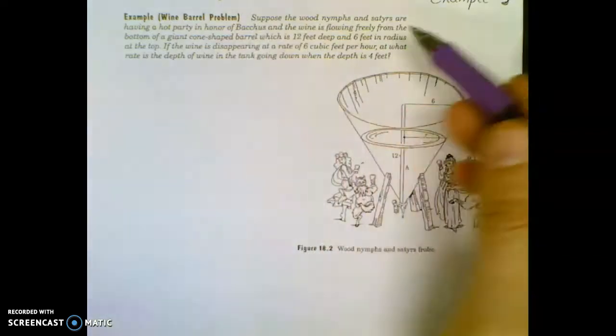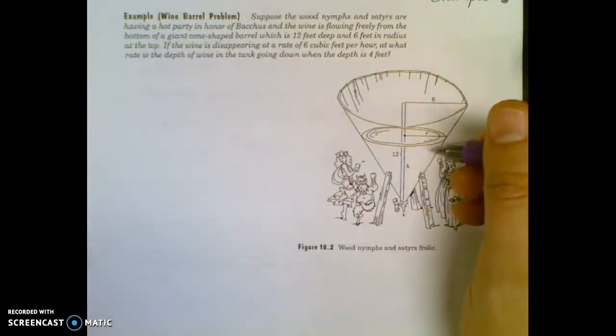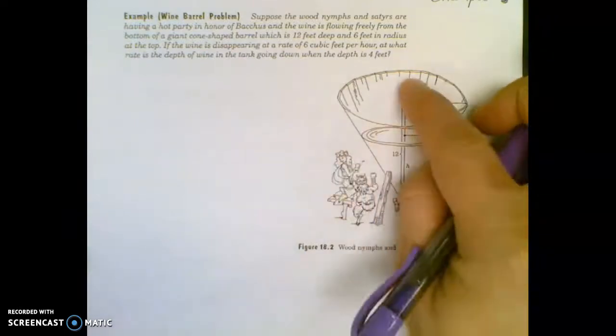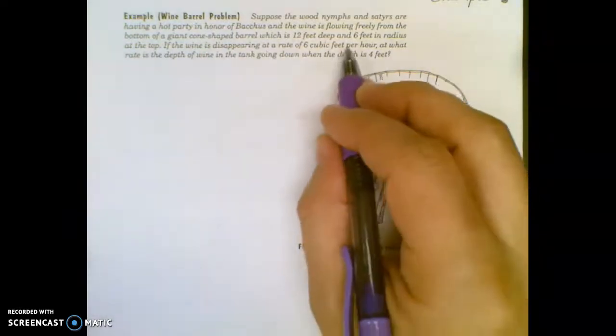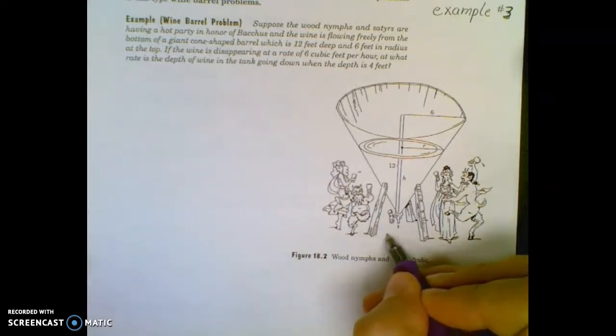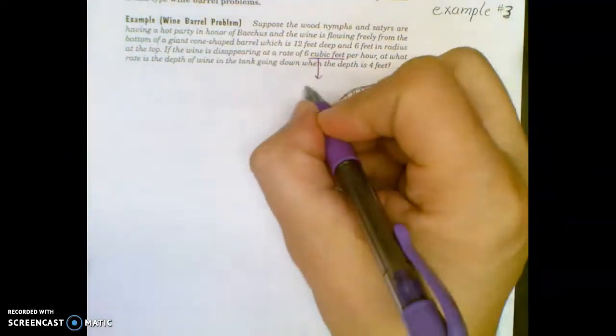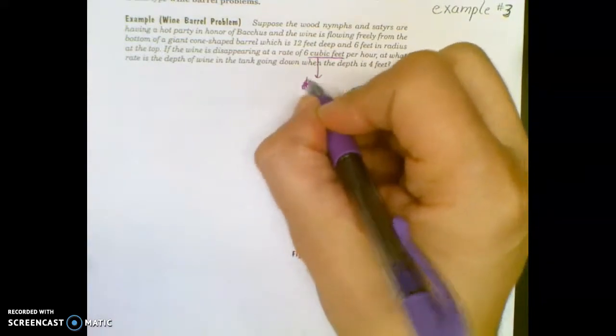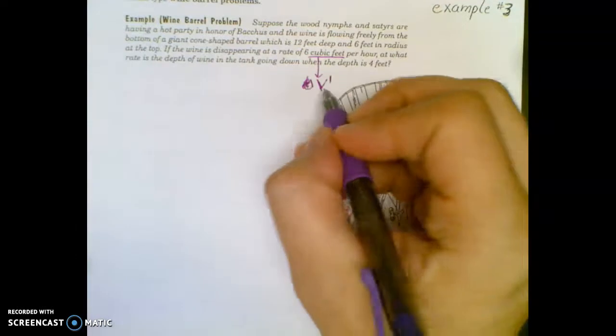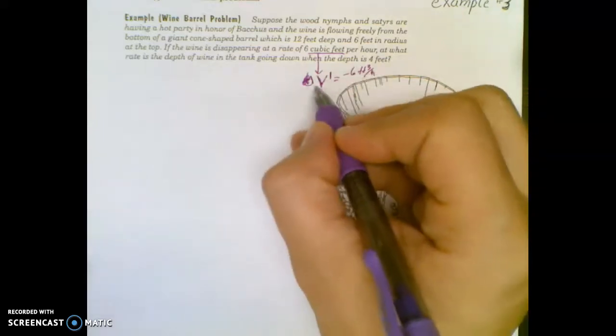Suppose that wood nymphs and satyrs are having a party, and wine is flowing freely from this giant barrel that's 12 feet deep and 6 foot in radius. So you got this big barrel, and that's its height of the whole barrel and radius of the whole barrel. If the wine is disappearing at a rate of 6 cubic feet per hour, so that's how fast it's coming out volume-wise, because cubic feet per hour, that to me, when I read that, I'm already thinking dv, I'm thinking that's volume prime.